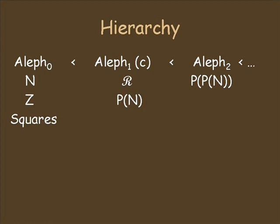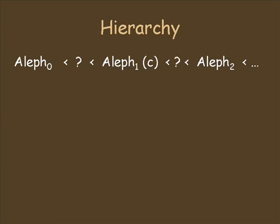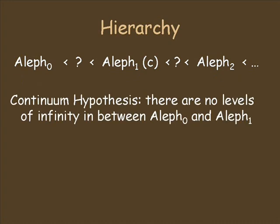Cantor looked for infinite sizes between the alephs. His famous continuum hypothesis was the guess that there are no infinite sizes between aleph naught and C — in other words, that there are no types of infinity between that of the counting numbers and that of the continuum. Cantor never found an answer to this question. In fact, to this day, we still don't know if there are levels of infinity in between. It was eventually shown that the continuum hypothesis can be neither proven nor disproven using modern set theory. The mathematics that we have right now is not quite powerful enough to answer that particular question.